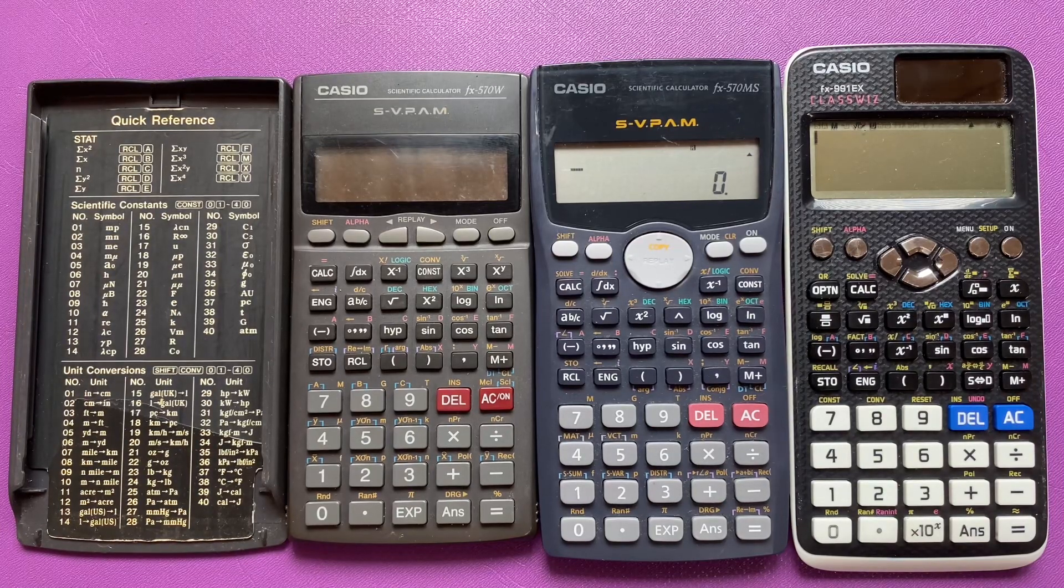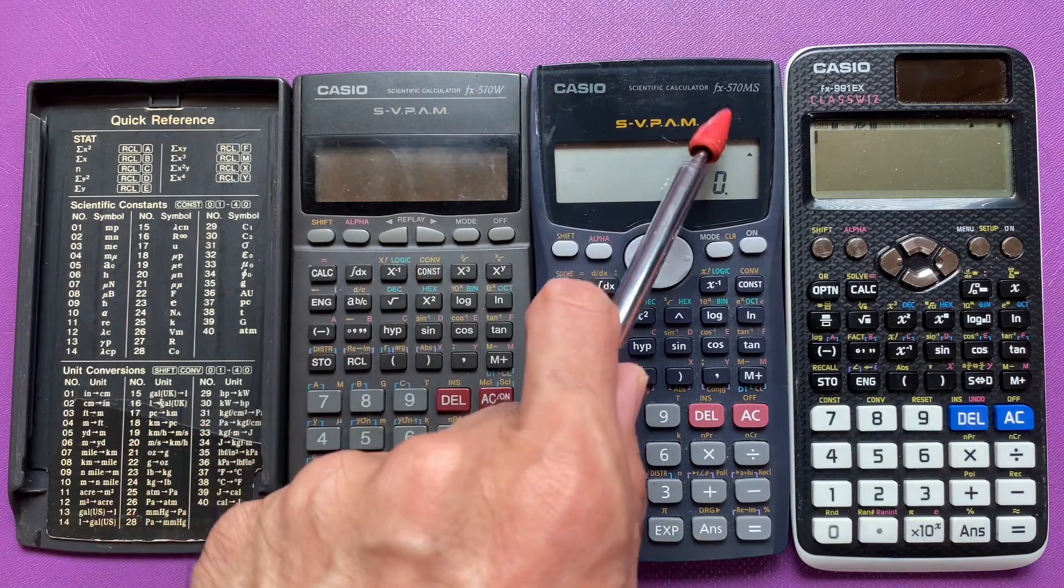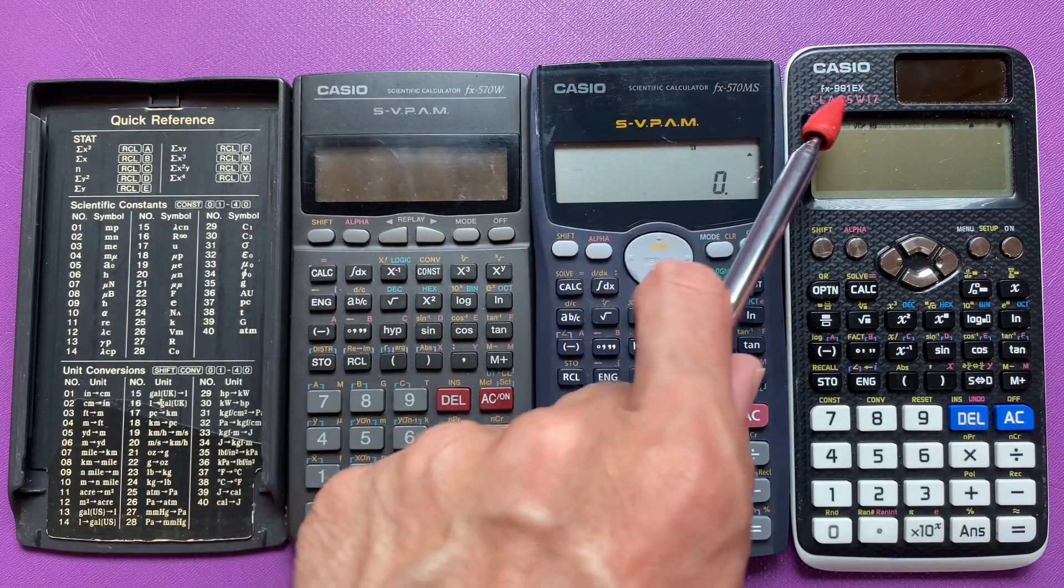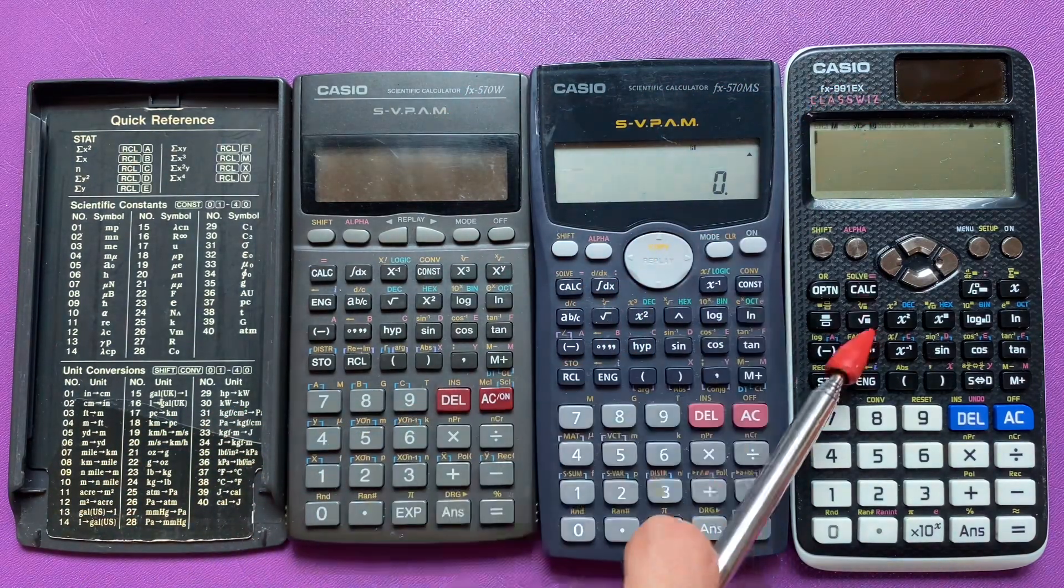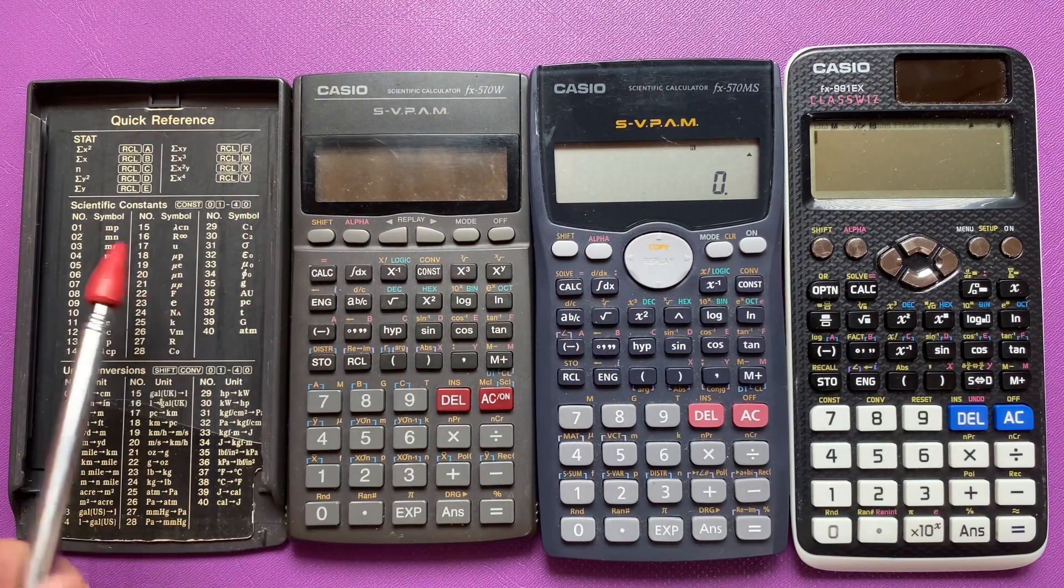Welcome back to my YouTube channel. In this video, I'll make a comparison between the 570 MS version and the 991 EX version. The 991 EX is powered by solar and battery power, otherwise the 570 EX version is battery powered.